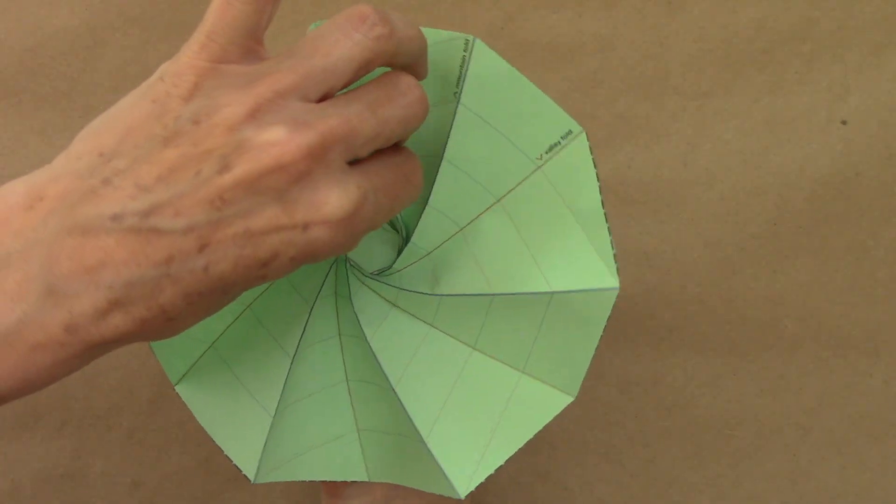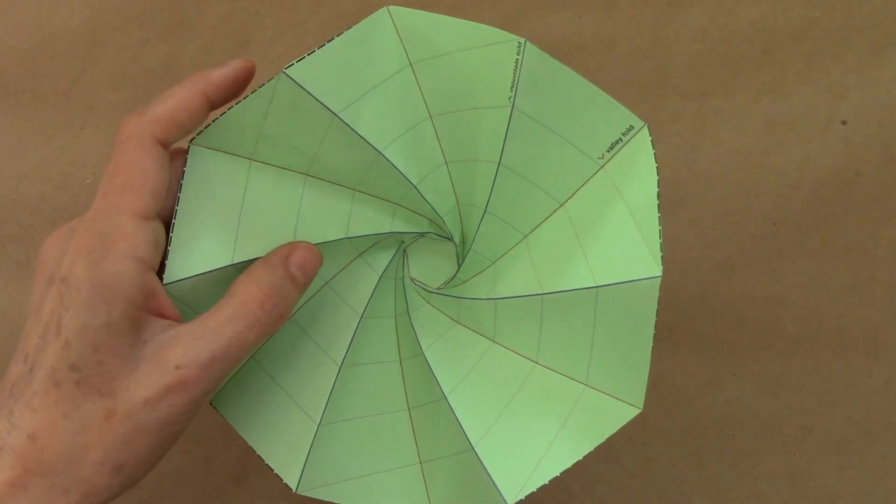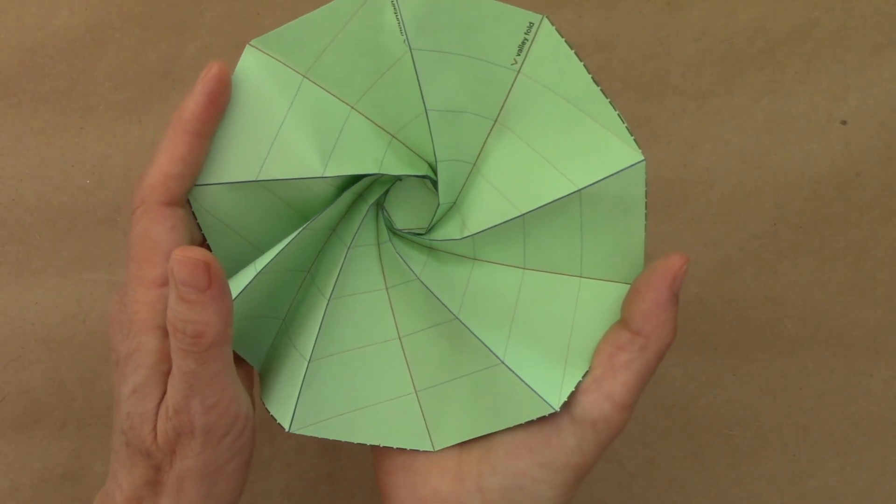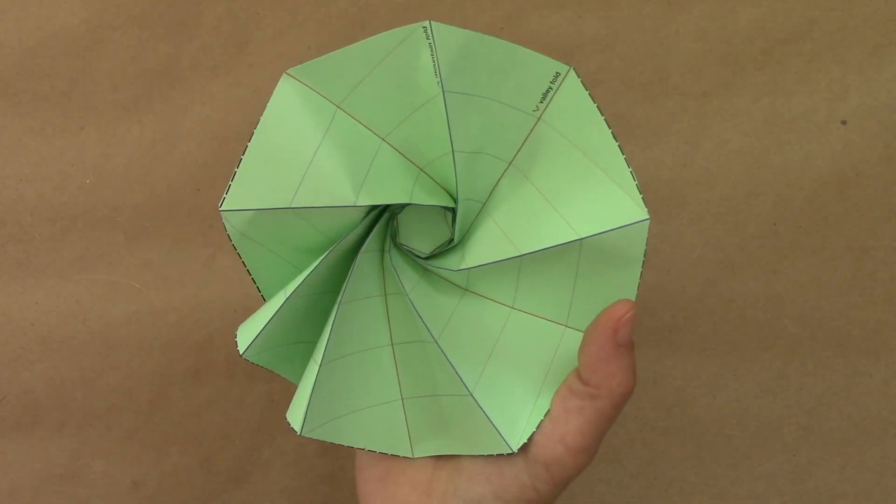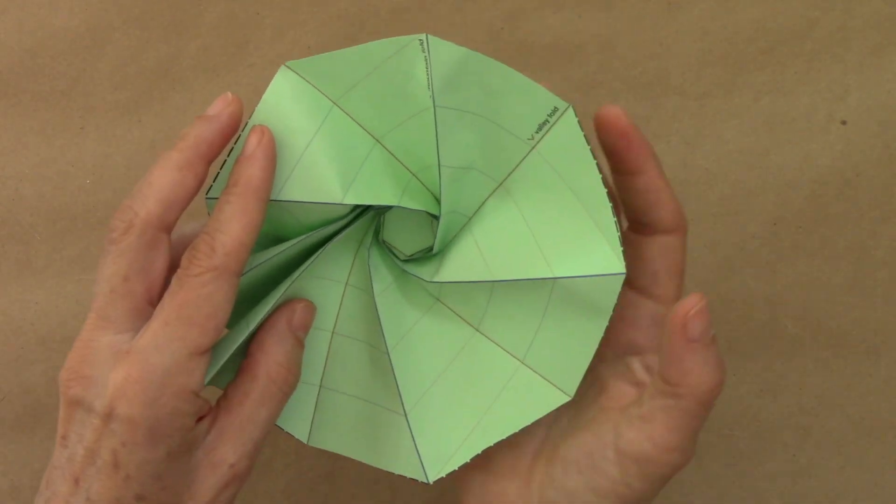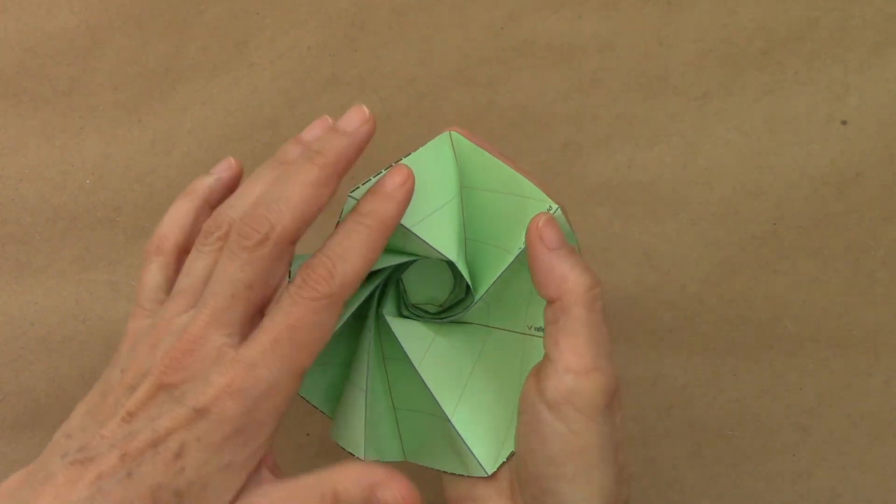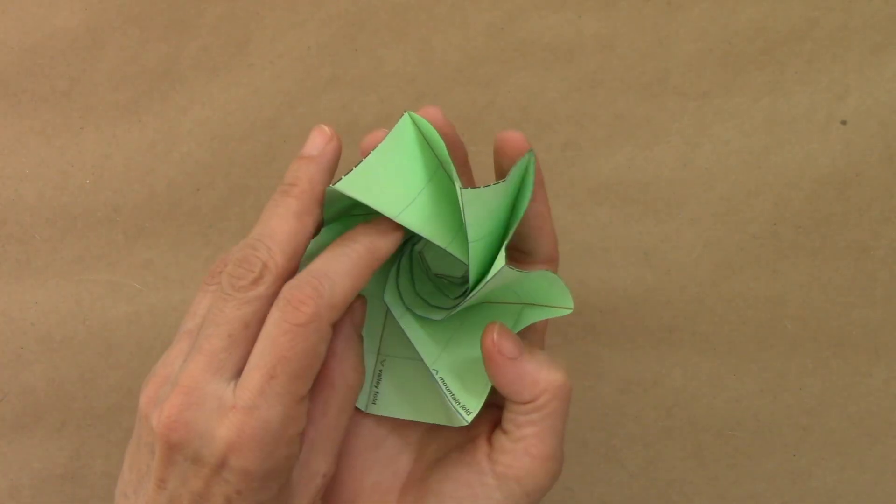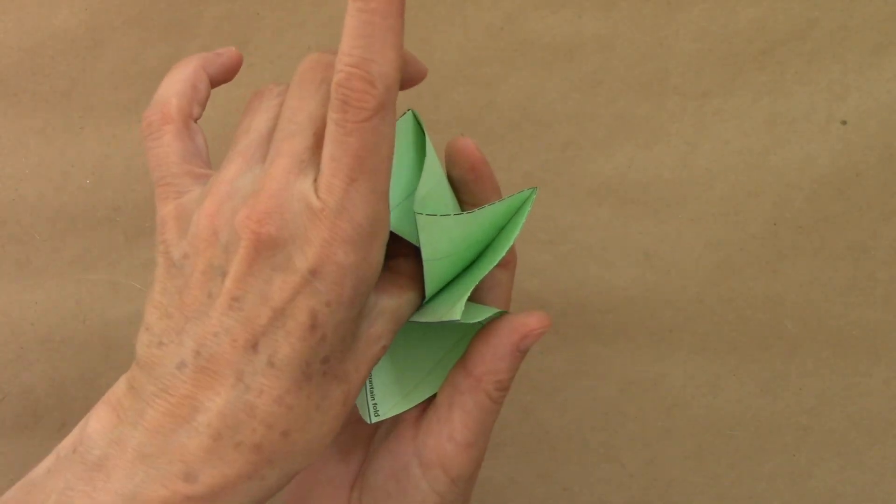We make sure that those creases at the center are sharp. Then we can start to press from the sides toward the center, allowing for that nice rotation of the central hexagon. As we move outward and collapse, we continue to reinforce the mountain and valley folds so that they are sharp.